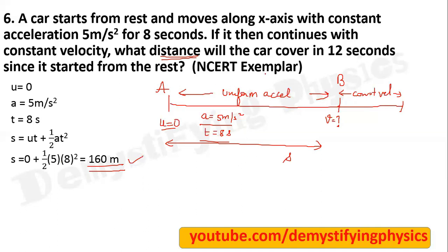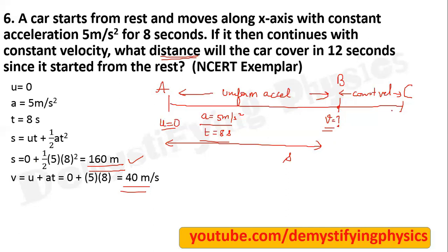You also need to know the velocity. So this will be the velocity after 8 seconds — you will move with that velocity. If you have constant velocity, let's find what is the velocity of the car after 8 seconds. Use the first equation of motion: v is equal to u plus at. U is 0 and time is 8 seconds. After 8 seconds you will move with this velocity.